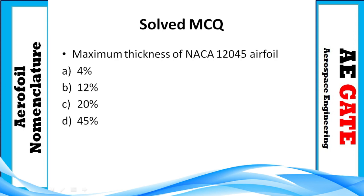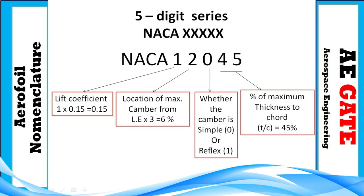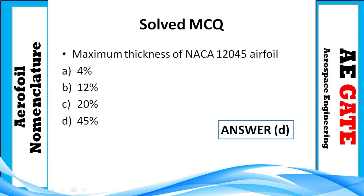MCQ 7: Find the maximum thickness of NACA 12045 airfoil. This is a five-digit series, so the last two digits represent the thickness-to-chord ratio, which is 45%. The correct answer is option B — 45%.